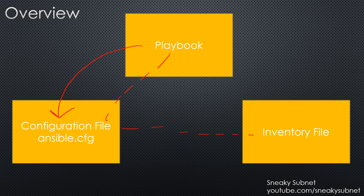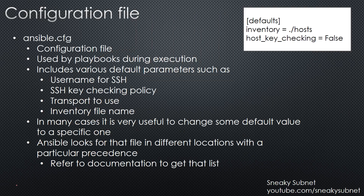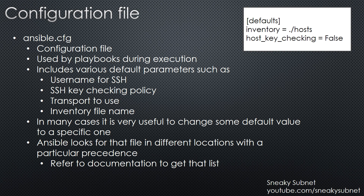Now we will start a more detailed exploration with the configuration file. It is called ansible.cfg and it is used by Playbooks during execution. This file includes various configuration parameters such as the username which Ansible will use for SSH, SSH key checking policy, transport which Ansible will use for SSH, inventory file name, and many more. Some of them we will discuss in the following videos.